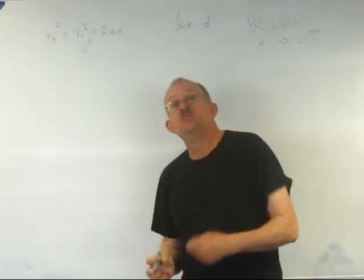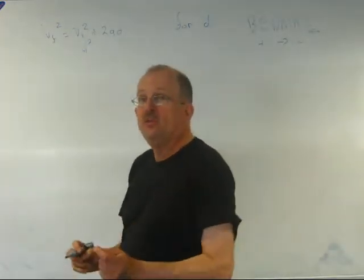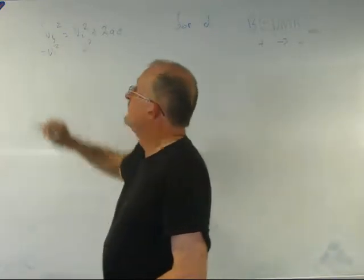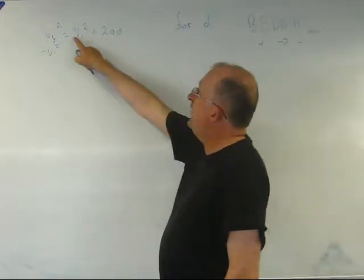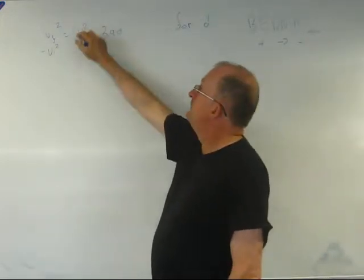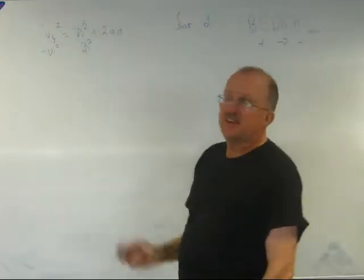And the rule is what you do to one side, you must do to the whole of the other. I'm going to subtract Vi squared from that side as well. Now, if I add Vi squared and subtract it, they cancel out.